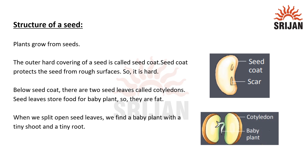The topic is structure of a seed. Plants grow from seeds. The outer hard covering of a seed is called seed coat. Seed coat protects the seed from rough surfaces, so it is hard.